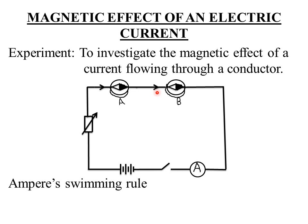Pass the wire such that it is passing over or above compass needle A, and passing below compass needle B. Then close the switch and observe the compass needles. Vary the strength of the current using the rheostat and observe the deflection of the needle.